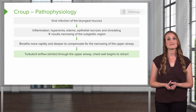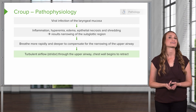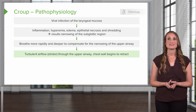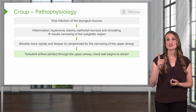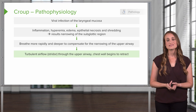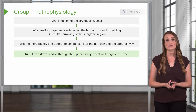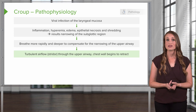Next, the patient will develop stridor, which is turbulent airflow. Imagine you're sitting in a cabin in the woods, and suddenly a blizzard develops. Near the fireplace, you'll hear a whistling of the air as that turbulent airflow goes down. Well, that's the same thing that happens in the airway, and that's stridor. You can hear it on the other side of the room without a stethoscope.